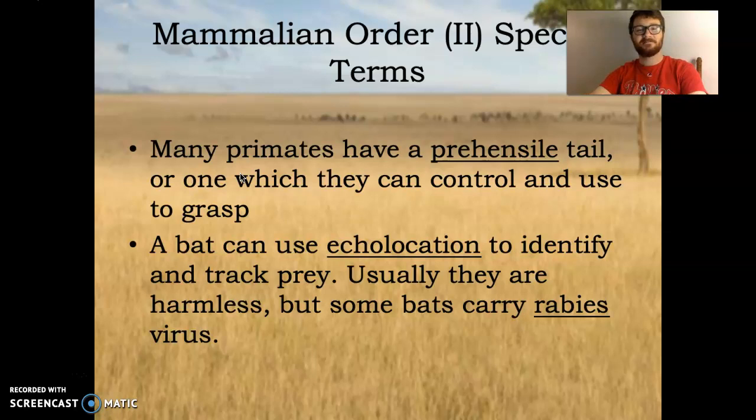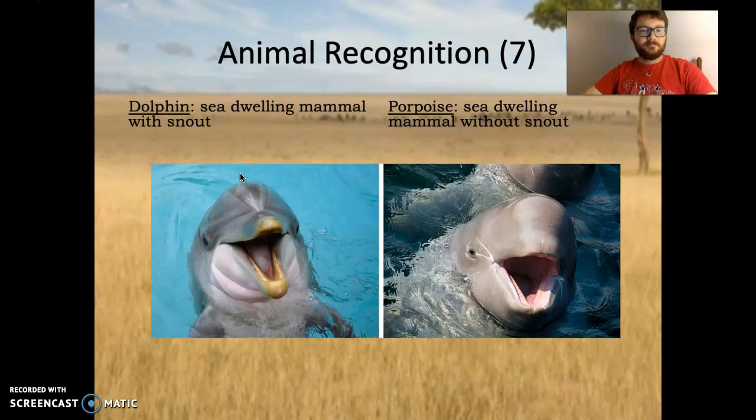Continuing on with our animal recognition. We have the dolphin — sea-dwelling mammal with a snout. You have a porpoise — it's a little bit different from a dolphin, sea-dwelling, but it does not have a snout. Kind of looks a little strange too.